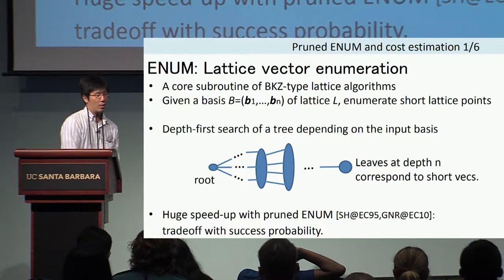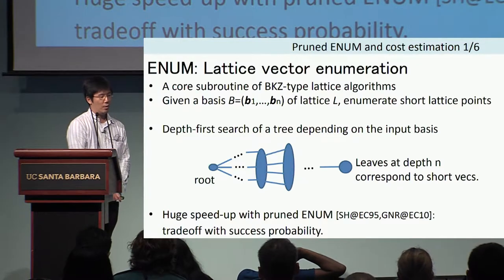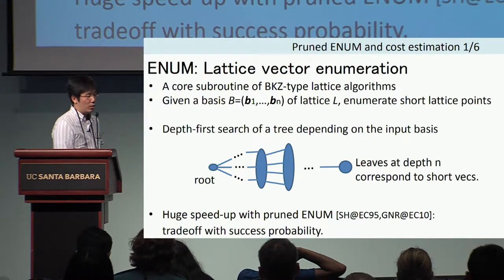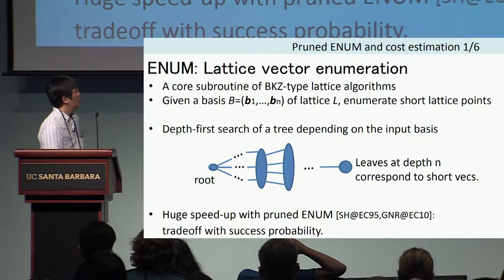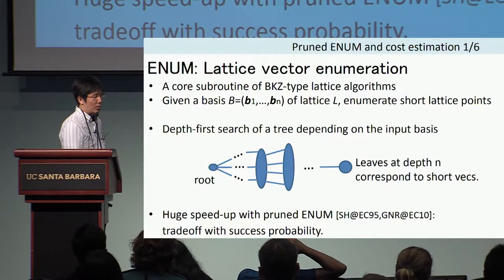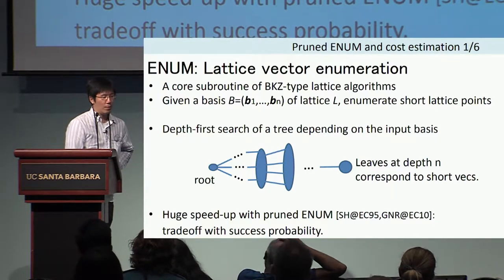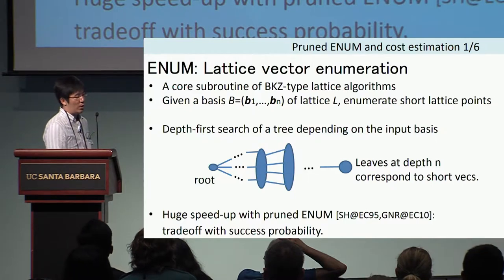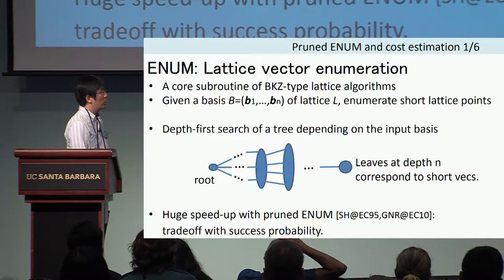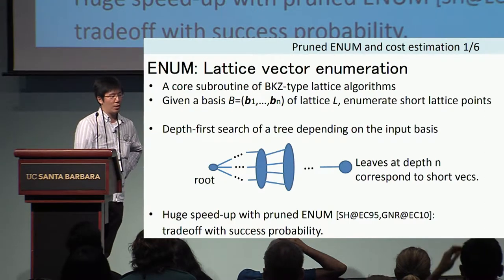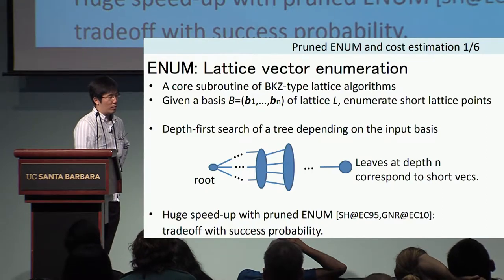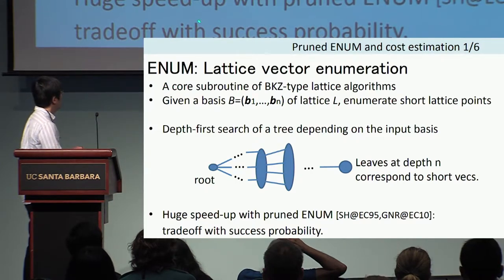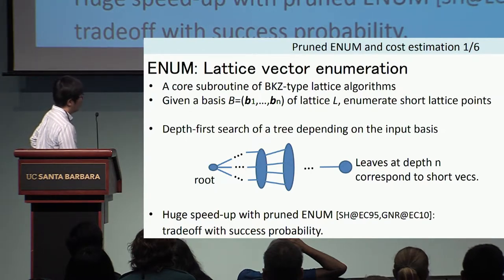This is the outline of the enumeration algorithm, which is the core part of the lattice reduction algorithm. For a given basis, it enumerates short lattice vectors via a depth-first search of an enumeration tree, depending on the input basis and given radius. One drawback is that it is too slow for the exact algorithm, but if we consider the probabilistic algorithm, it is much faster.